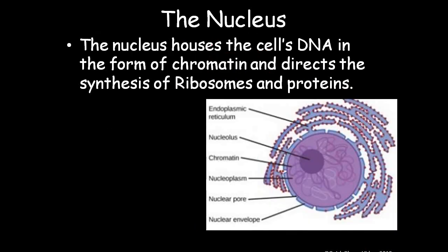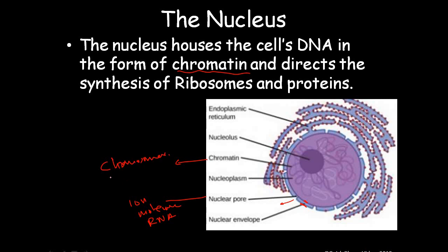The nucleus is the most important part of the cell. It houses the cell's DNA in the form of chromatin, and directs the synthesis of ribosomes and proteins. The nucleus has a nuclear envelope — a double-membrane structure made up of a phospholipid bilayer. It has nuclear pores that help the passage of ions and molecules, including RNA, between the cytoplasm and the nucleoplasm. Chromatin forms the chromosomes and is made up of DNA — the hereditary material.